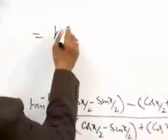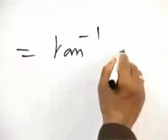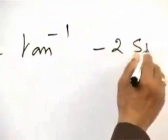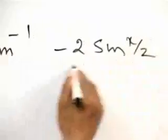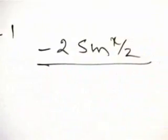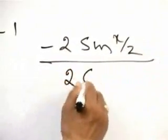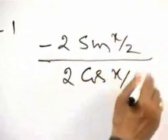That is equal to tan inverse of, this will get cancelled, minus 2 sin x by 2 divided by twice cos x by 2.